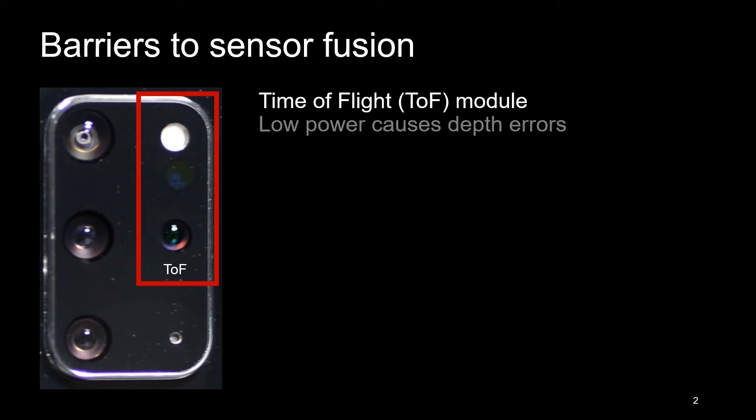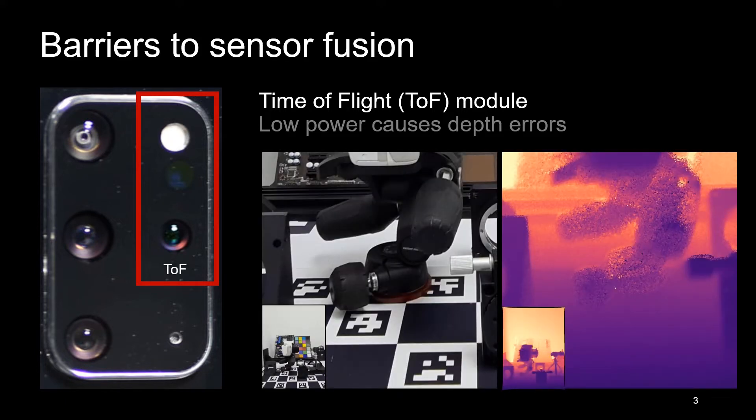First, our Time of Flight, or ToF module, uses active illumination to sense depth. But in a mobile device, illumination power is limited. This leads to high contrast noise in the depth map on the right. In the RGB image, we see that this comes from low-reflectance black regions.